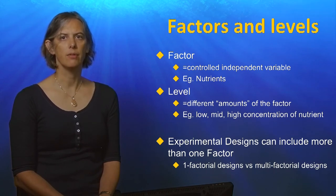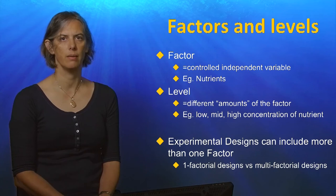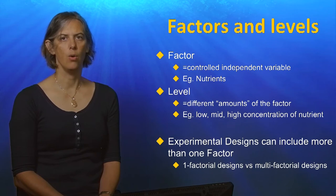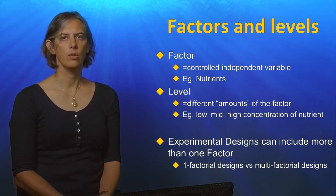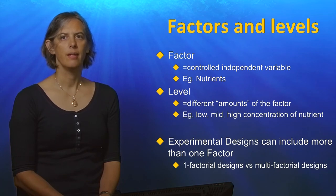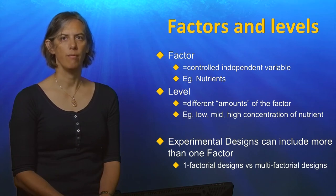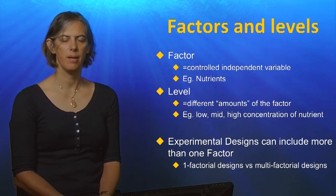Factors have levels — that is, the different amounts of the factor that you are going to dose the experimental subjects with. In this case, there are three levels: low, mid, and high concentrations of nutrients. Experimental designs can include more than one factor. Therefore, the design of the experiment may be referred to as a one factorial, two factorial, three factorial, and so on, experiment.